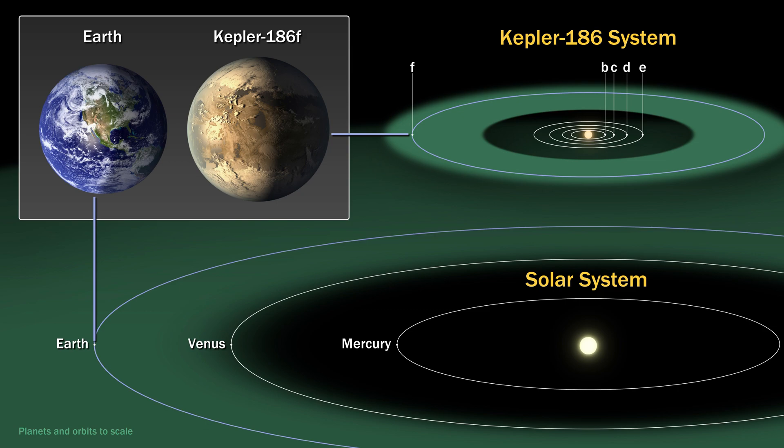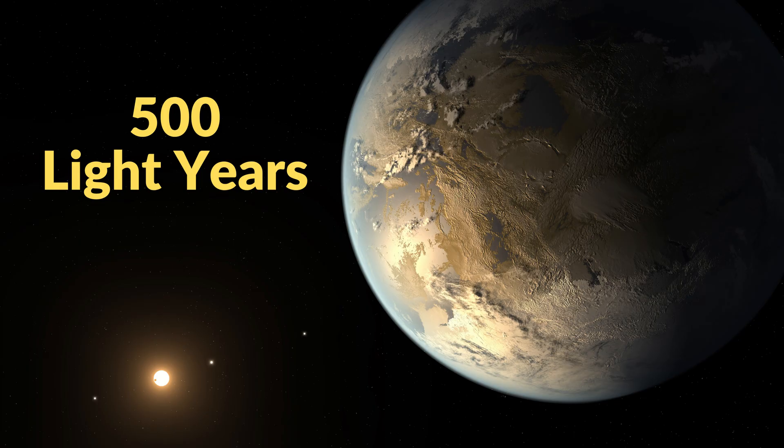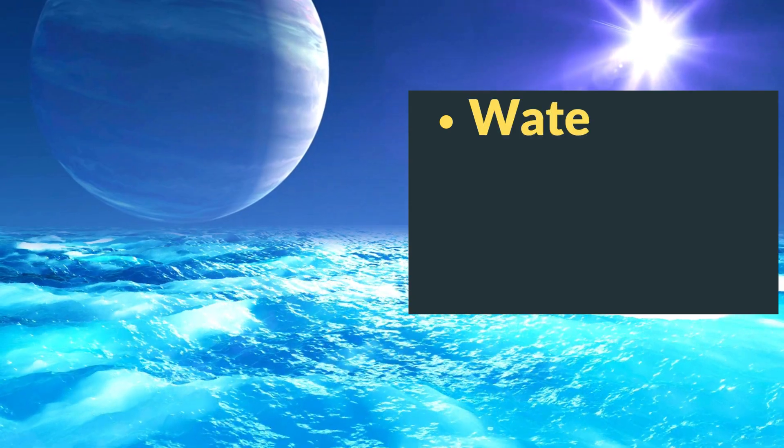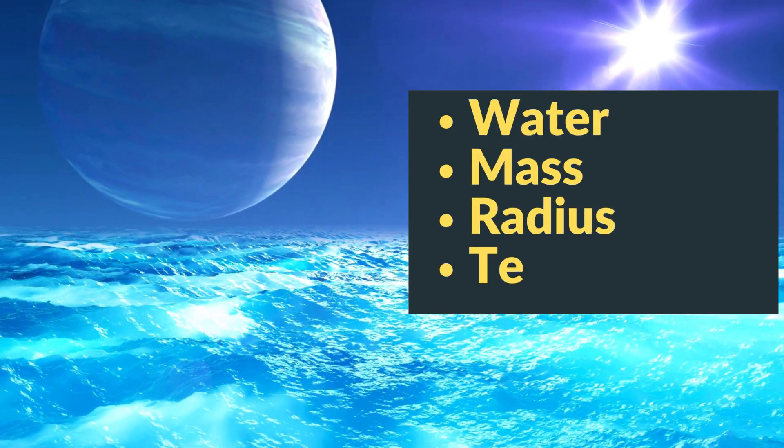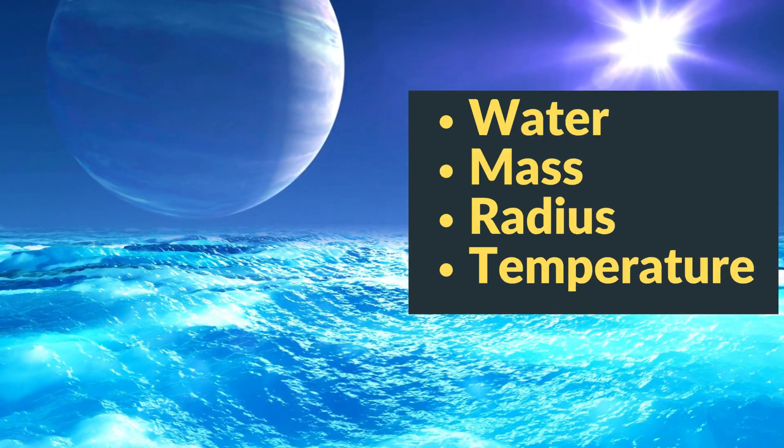The most habitable exoplanet so far is Kepler-186f in a planetary system called Kepler-186 system. It was discovered in 2014 and is approximately 500 light-years away from Earth. It contains water and qualifies the mass, radius, and temperature requirements.